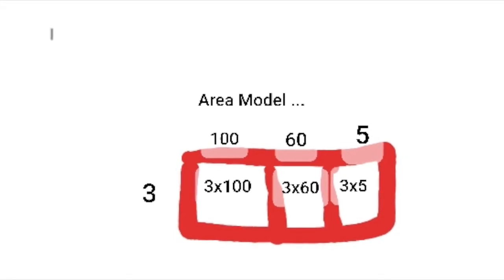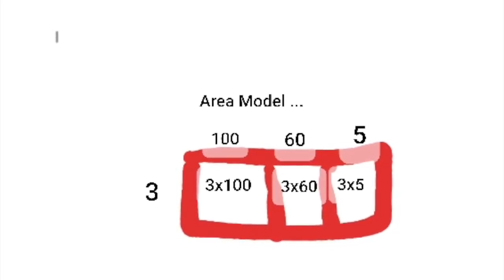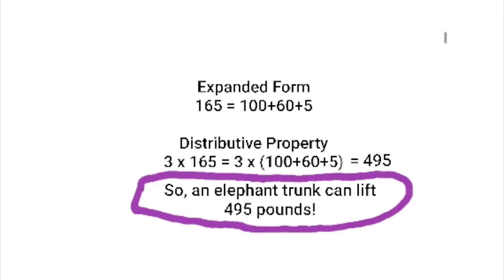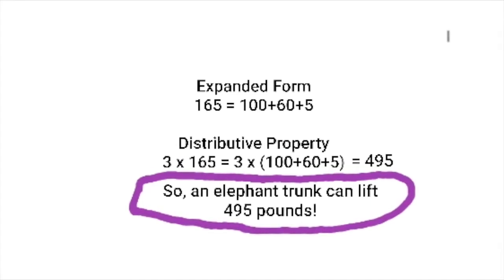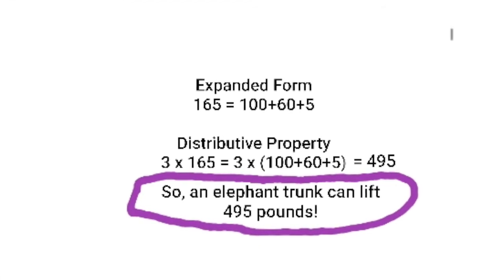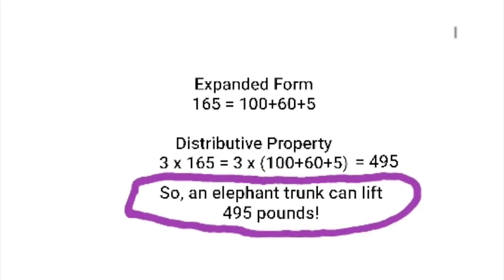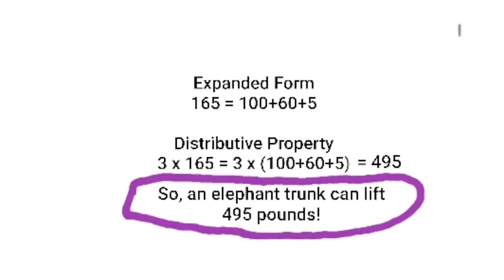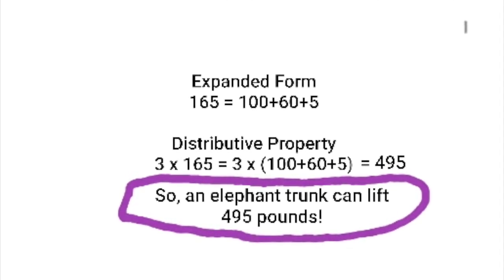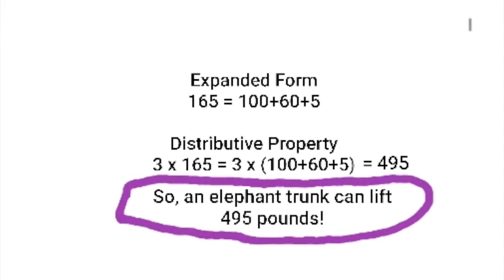Then you find the sum of those products, which you call partial products, equals 495. So an elephant trunk can lift 495 pounds. That's equivalent to three people.